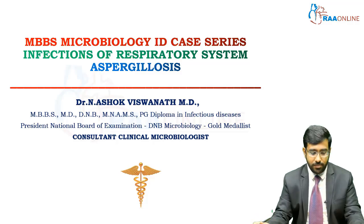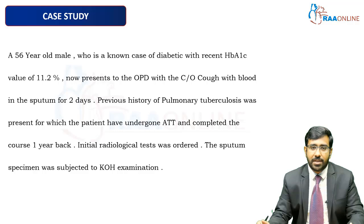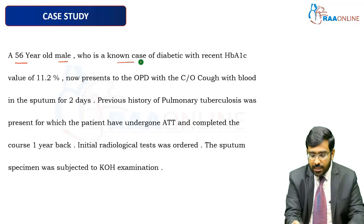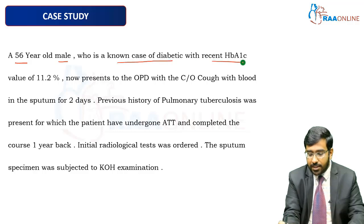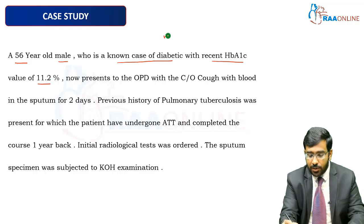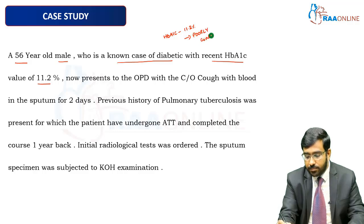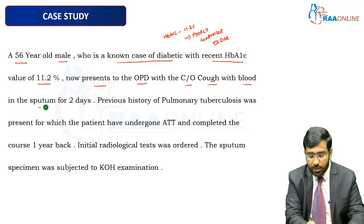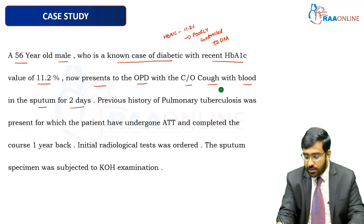Let us go into the topic. This is a case study: a 56-year-old male, a known case of diabetes, with a recent HbA1c of 11.2 — indicating poorly controlled Type 2 diabetes mellitus. He presents to the outpatient department with a complaint of cough with blood in the sputum (hemoptysis) for two days.